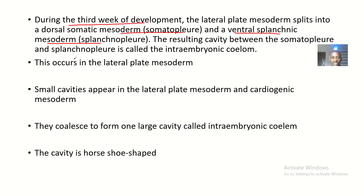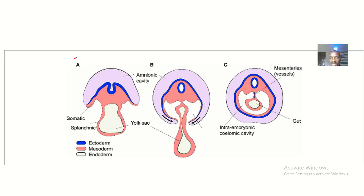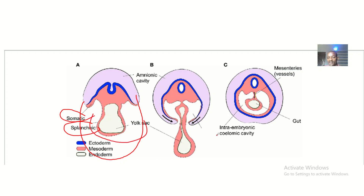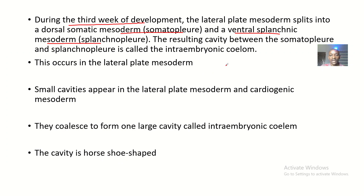The somatic mesoderm is at the back, and the splanchnic mesoderm is at the front. When they come together and fuse, there is obviously a space, and that space is what they call the intra-embryonic coelomic cavity.